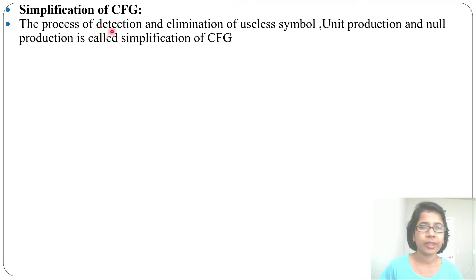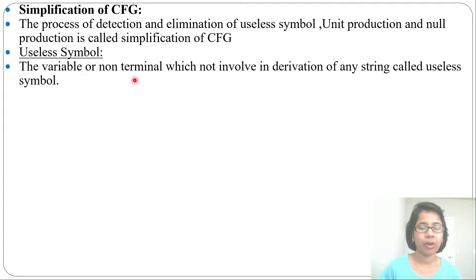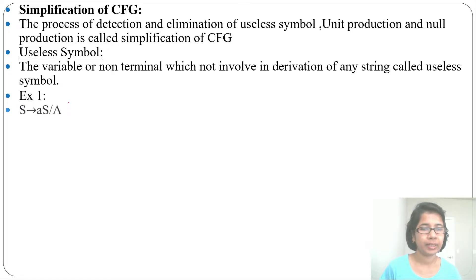Let's discuss simplification of context-free grammar. The process of detection and elimination of useless symbols, unit productions, and null productions is called simplification of CFG. Let's first look at useless symbols. A variable or non-terminal which does not involve in derivation of any string is called a useless symbol.